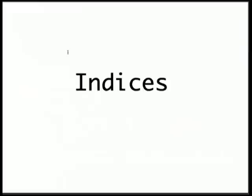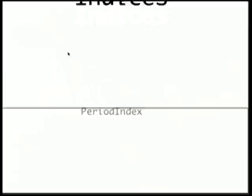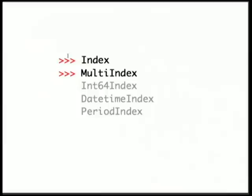The basis of data frames and series are built along an index, and there are a few different types. There's a standard index, a multi-index which I'll cover, an integer index for plain numbers instead of named labels, date and time indices for time series where you slice by years, and a period index for ranges like quarterlies, days, or weeks.